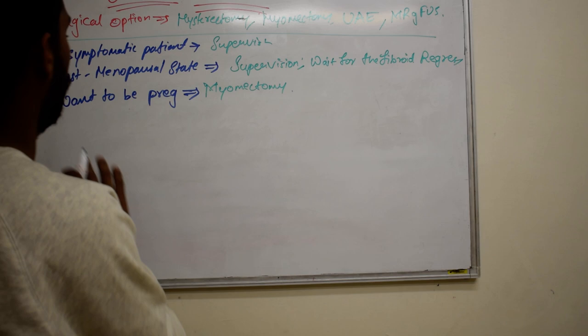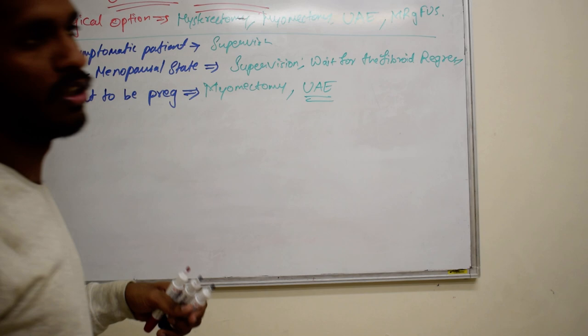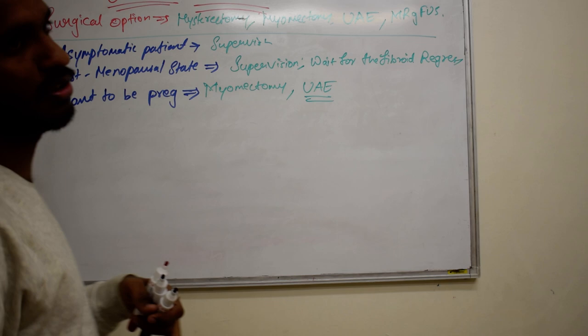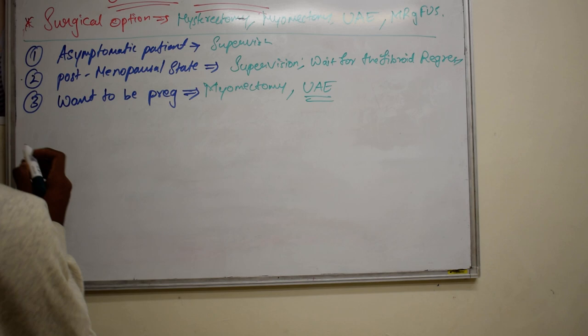Another option is UAE — uterine artery embolization — which I have already discussed. This is still a questionable technique because in some guidelines people say it can be used, and in others they don't recommend it.